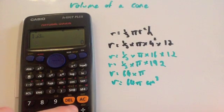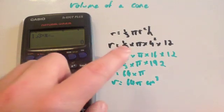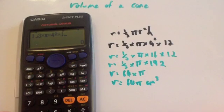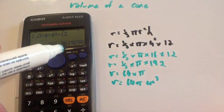3, a third times pi, shift pi, times the radius, which is 4 squared, times the height, which equals 12. And you would get the answer straight away, which equals 201.0619298.